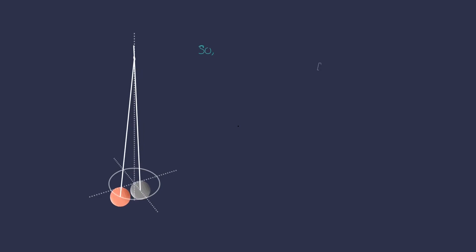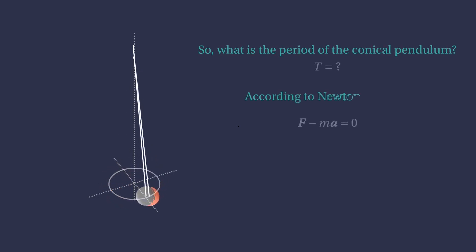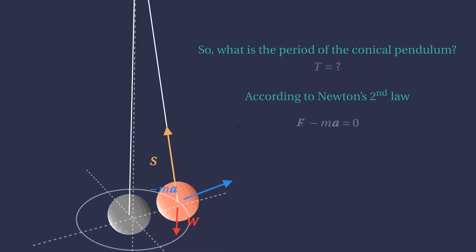So now the question is, what is the period of the conical pendulum? To find the period T, we establish the balance of forces acting on the bob. They are its weight W and the tension on the string S.